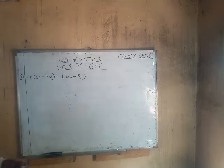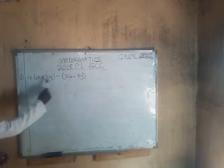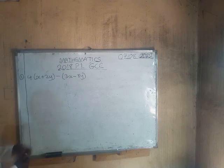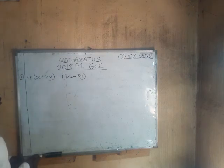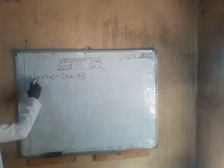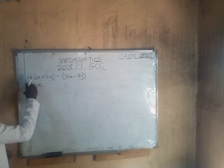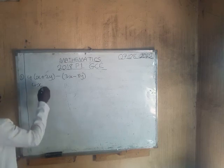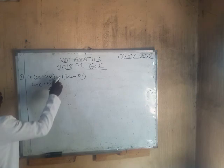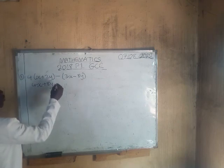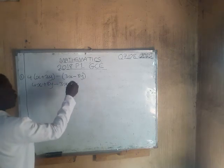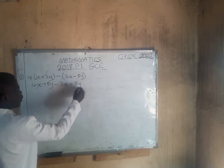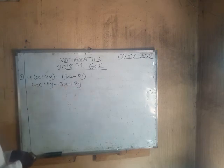To simplify this expression, we have to remove the brackets by distributing 4 and negative 1. So this will be 4 times x, which is 4x; 4 times 2y, which is 8y; negative 1 times positive 3x, which is negative 3x; and negative 1 times negative 8y, which is positive 8y.